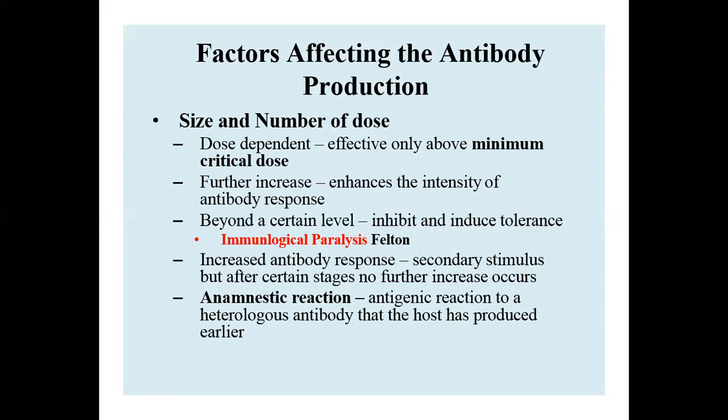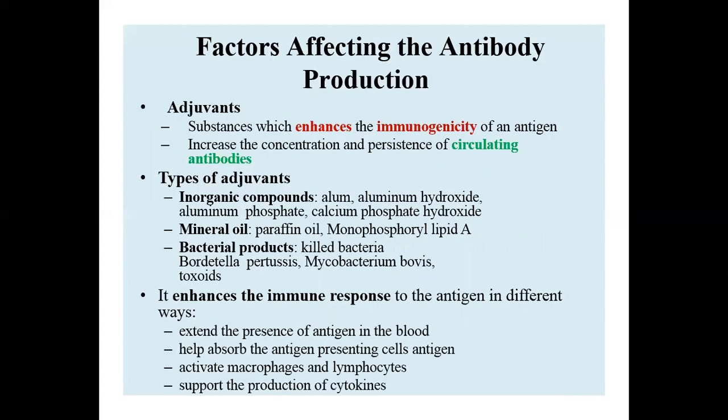This is also known as the anamnestic reaction, which is the antigenic reaction to a heterologous antibody that the host has produced earlier. Adjuvants are substances that enhance the immunogenicity of an antigen, increasing the concentration and persistence of circulating antibodies. Types of adjuvants include inorganic compounds, mineral oil, and bacterial products.